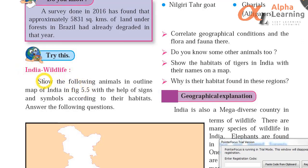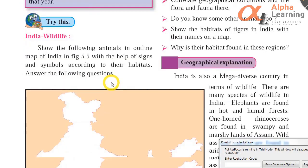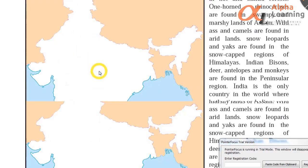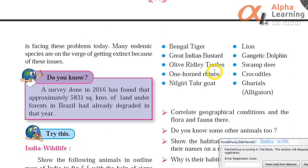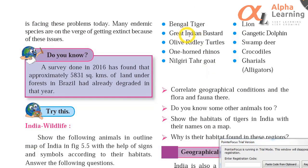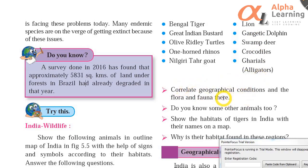India wildlife. The following animals are shown in the map: Bengal tiger, great Indian bustard, olive ridley turtles, one-horned rhinos, nilgiri tahr, lion, Gangetic dolphin, swamp deer, crocodiles, gharials, etc. Correlate geographical conditions and the flora and fauna there.